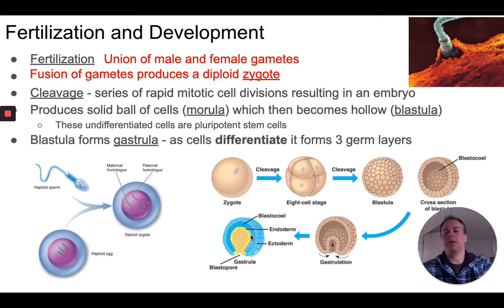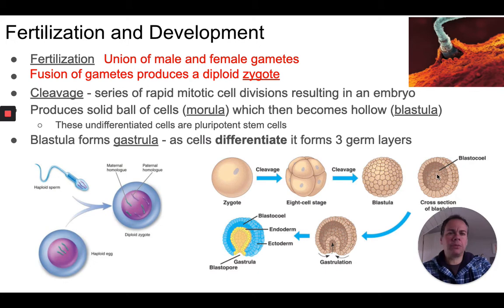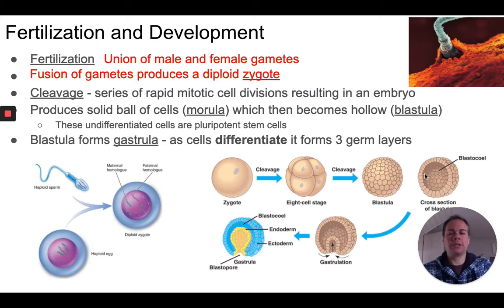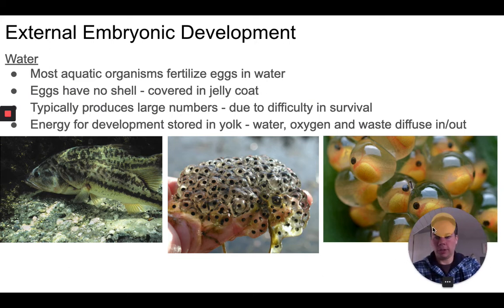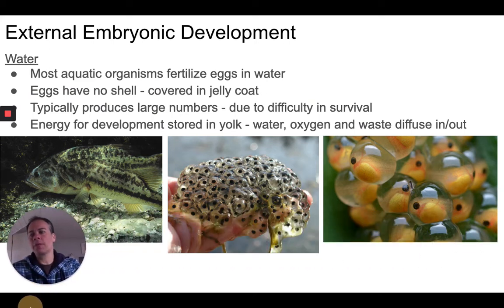The different germ layers are color-coded in diagrams, showing how these cells will take on different functions and become different parts of the organism as development continues. These early embryonic cells are called embryonic stem cells — also called pluripotent stem cells. These are cells that could go on and develop into many different types of cells and tissues in the organism.